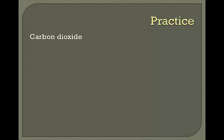Our last example is carbon dioxide. Carbon has four electrons and bonds to two oxygens, each with six valence electrons. Carbon bonds here and here, giving oxygen double bonds — carbon dioxide has oxygen double-bonded to carbon, double-bonded to oxygen.